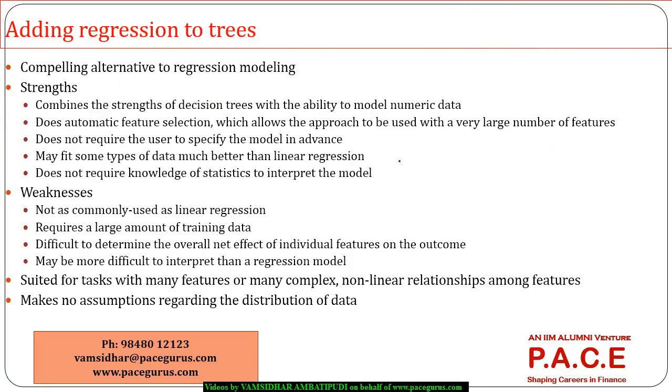Coming into the process, if I have to add a regression to the trees, we have to always look at it as a kind of an alternative to the regression model that we have created earlier using the LM function. It is a combination of regression, which is used for modeling numeric data, along with the decision trees, which are primarily doing the partitioning of the data. That is where probably I should see that the model should be much more efficient compared to the typical regression model.